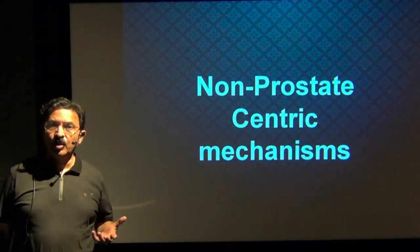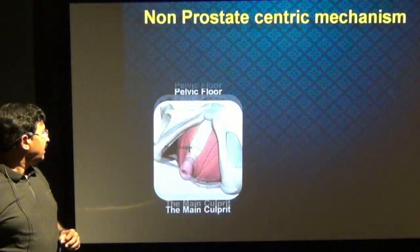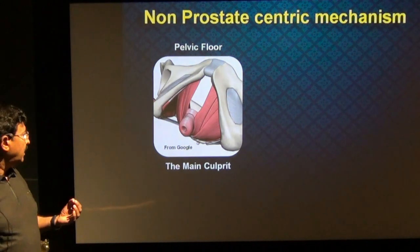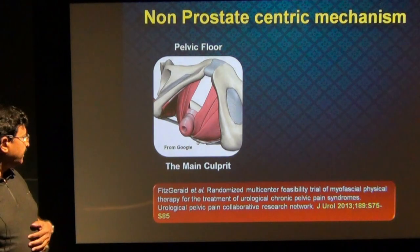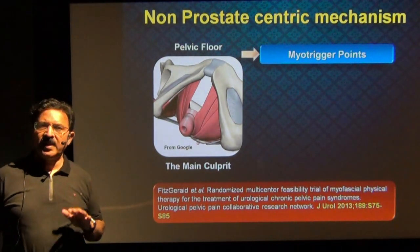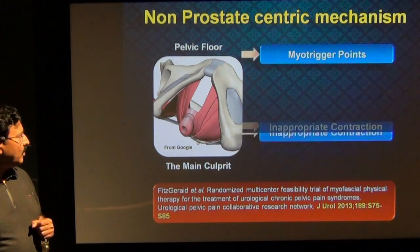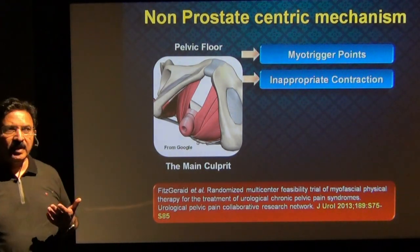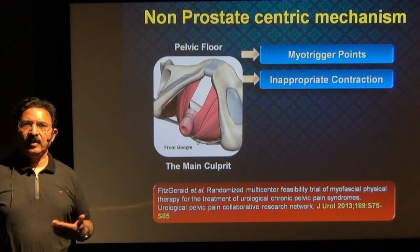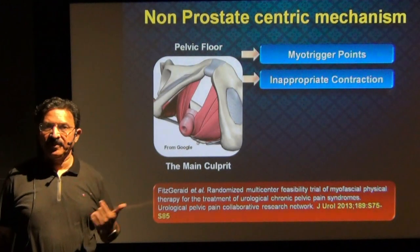Let me now talk about non-prostate-centric mechanisms, which in some patients are actually the main reason for the disease. In some people, the pelvic floor is the main culprit and the prostate suffers. It has been studied and published that in some patients, trigger points exist in the pelvic floor — when stimulated, pelvic floor muscles throw up a contraction. Some patients have inappropriate contractions; some actually contract the pelvic floor while voiding to stop the stream and then resume it. This habit of contracting the pelvic floor while voiding creates high pressure within the prostatic urethra and gives rise to an opportunity for intraductal reflux.